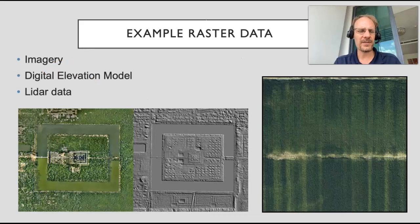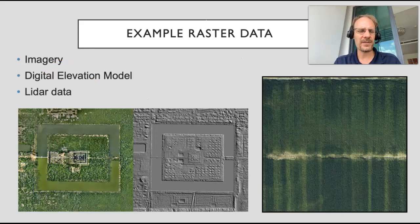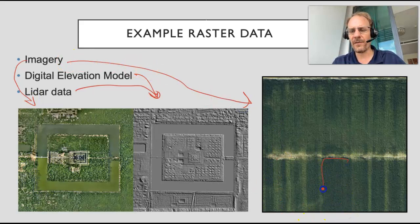We have some pictures of Angkor Wat here. This right here is lidar data and it created a digital elevation map from this lidar data. So elevation - here's just some imagery. Here's an example of imagery from agriculture where we're identifying areas where the crop is dark green and healthy and areas where the crop is light green and needs more nitrogen fertilizer.